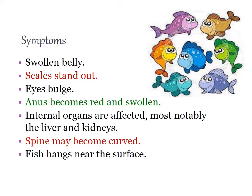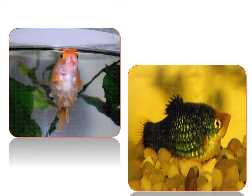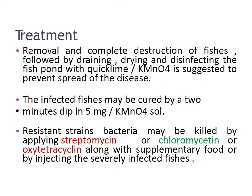Additional symptoms of dropsy include the anus becoming red and swollen, internal organs affected — most notably the liver and kidneys — and the spine may become curved. Fish hang near the surface of water. This is a picture of a fish with dropsy.